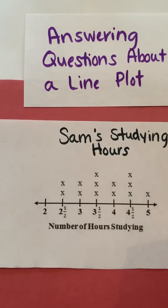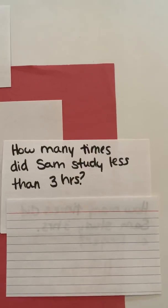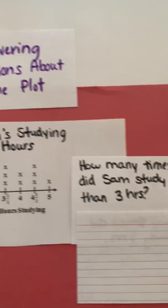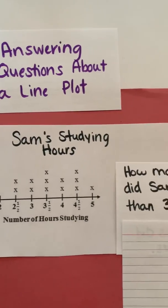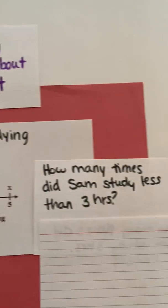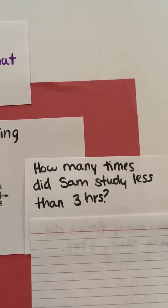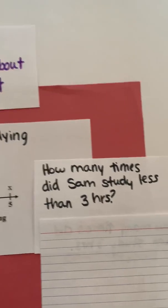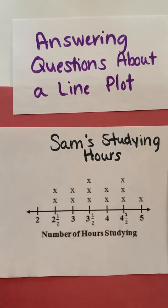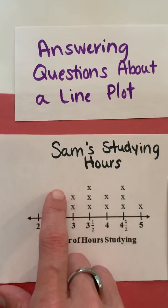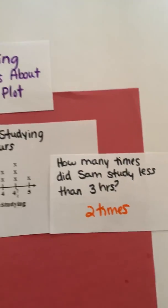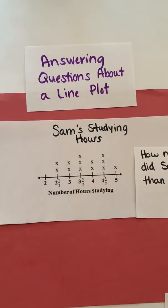The last question is: how many times did Sam study less than three hours? This is different from the last question because it does not include the three — it says less than three, not three or more. So we are not going to include the three, and looking at everything before it, he only studied two times for less than three hours. So, go Sam — he spent a lot of time studying and I'm sure he'll do well.